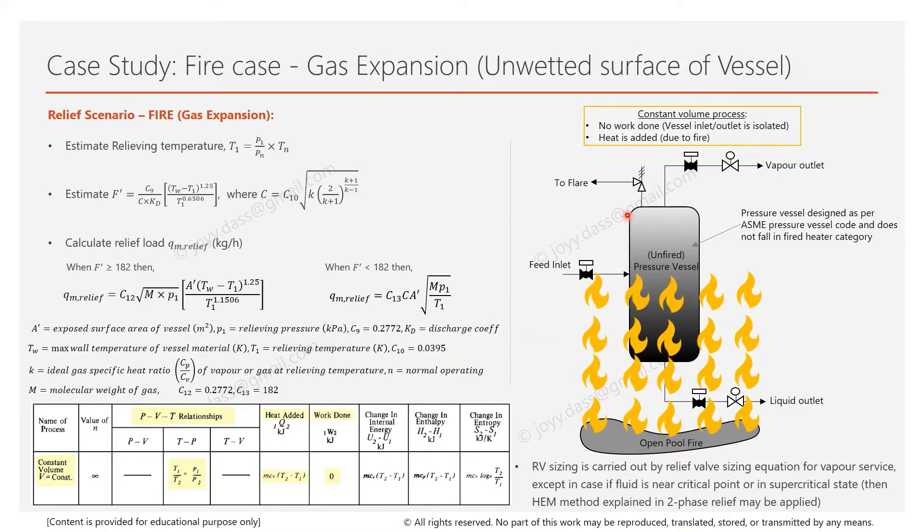The exposed surface area of the vessel is estimated. In this case we consider there is no liquid in the vessel, or if there was any liquid it has already been vaporized and relieved. So the entire vessel is full of gas, and the exposed surface area of the vessel and connected piping is considered.